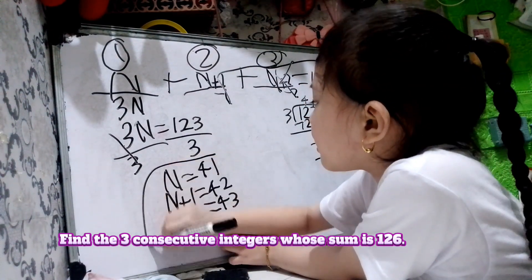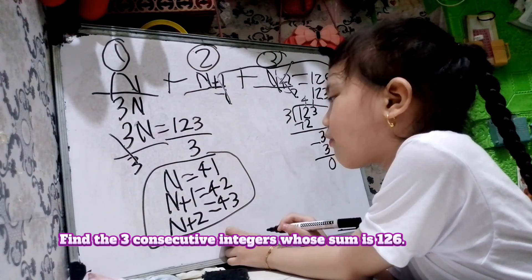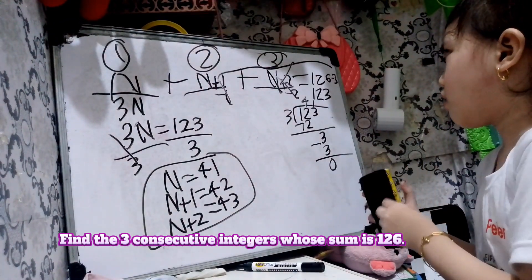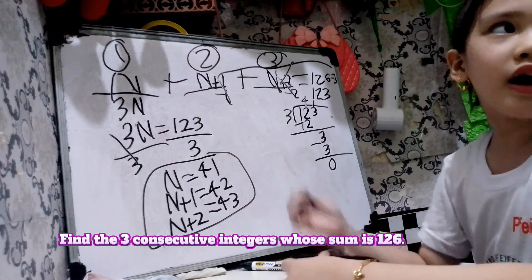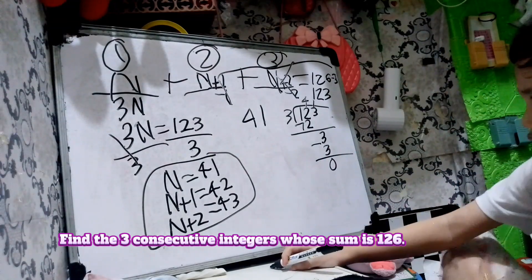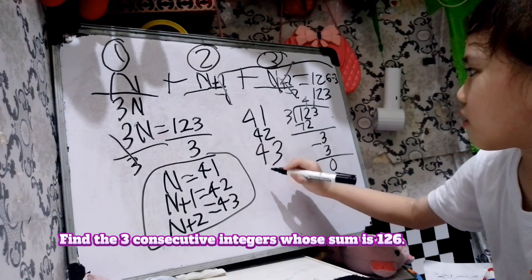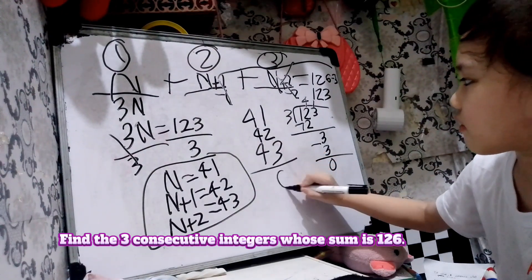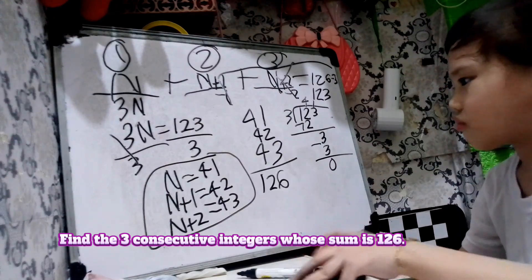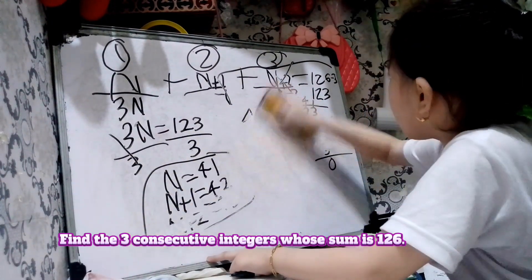So our answer is: N equals 41, N plus 1 equals 42, N plus 2 equals 43. When you add these 3 consecutive numbers, will that equal 126? Try to check your answer. 41 plus 42 plus 43 is equal to 126. So that's equal — very good!